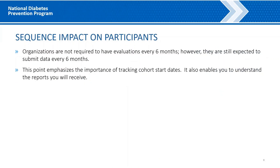Sequence Impact on Participants. Organizations are not required to have evaluations every six months; however, they are still expected to submit data every six months. We understand that not all organizations are able to start new cohorts more than once a year. This point emphasizes the importance of tracking cohort start dates. It also enables you to understand the progress and evaluation reports you will receive.